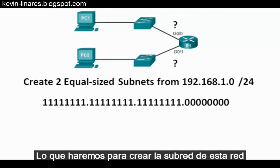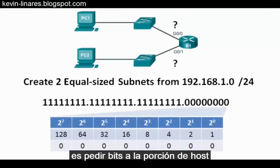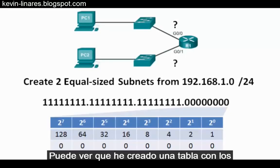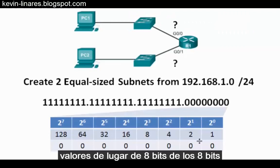What we'll want to do to subnet this network is borrow bits from the host portion of the subnet mask here. You can see that I've put up a table with the 8-bit place values of the 8 bits in the last octet.